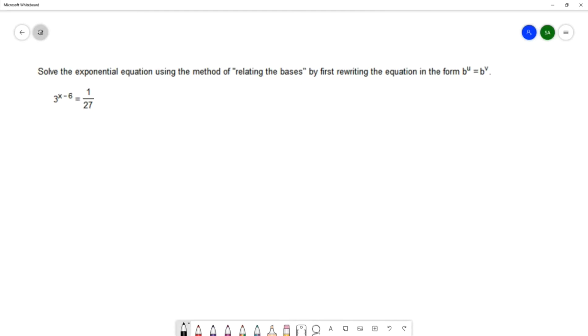The method of relating the bases starts off with you writing your equation in this form b to the u equals b to the v. This is very important for the method because the method requires that we have the base on each side of the equation being the same.